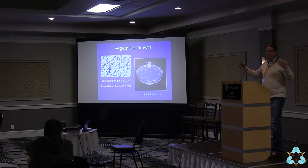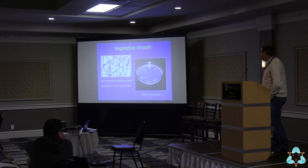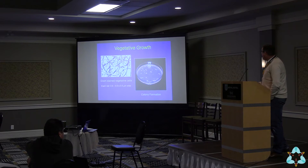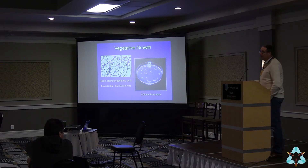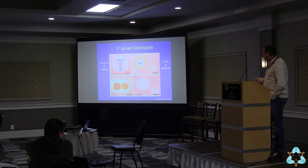Diagnostically, we can grow this bacteria on very selective media. In the lab, we can actually grow the organism and if we look at it under a microscope we see these chains of cells. We have various media which selectively grow Paenibacillus larvae, to help us diagnose that that is the organism we're looking at.